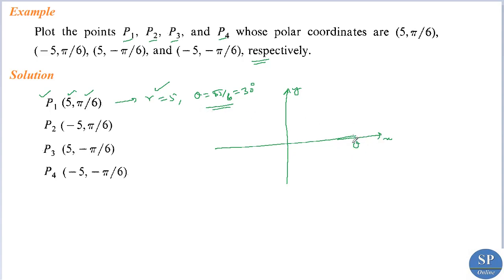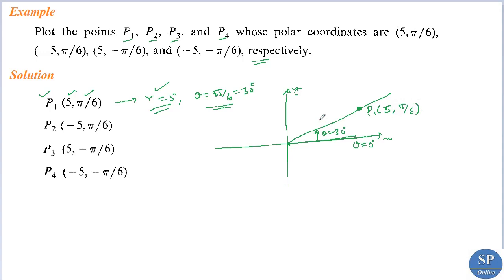The positive x-axis is θ equal to 0 degrees. So θ equal to 30 degrees means we rotate this line anti-clockwise by 30 degrees. To get r equal to 5, we consider a point at a distance 5 units from the origin along that direction. So this will be the point P1: (5, 30°) or (5, π/6). This length is 5 units and this angle is θ equal to 30 degrees or π/6.